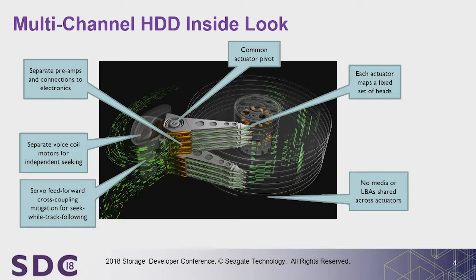Splitting the actuator does increase cost — you're adding two sets of servo electronics, two VCMs, two of everything. The recording technology is orthogonal to this solution; in Seagate's roadmap both PMR and SMR recording technologies are planned for this architecture. The drive presents itself as two LUNs. The IOPS per terabyte requirements we showed — from those two customer charts — are specifically SMR requirements.